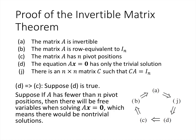Next, we prove that D implies C. Statement D says Ax equals 0 has only the trivial solution, and C says the matrix A has n pivot positions. Because that equation has only the trivial solution, we can't have any free variables — any free variables in the augmented matrix would give us extra non-trivial solutions. That tells us the matrix A has n pivot positions.